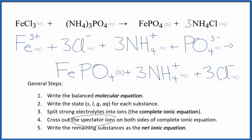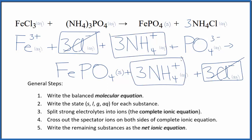Now we cross out spectator ions. They're on both sides of the complete ionic equation. In the reactants here, I see three chloride ions. I also see three chloride ions in the products. Let's cross that out. Three ammonium ions here in the reactants and three in the products. We get rid of those.